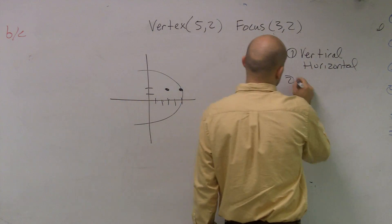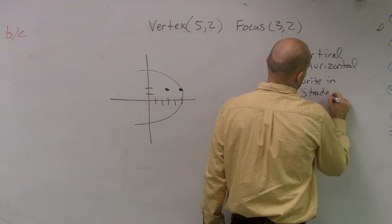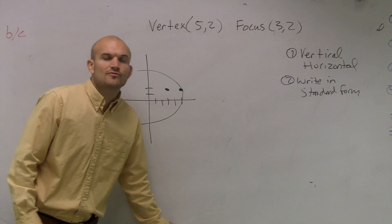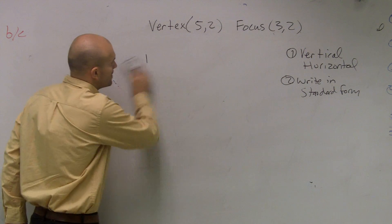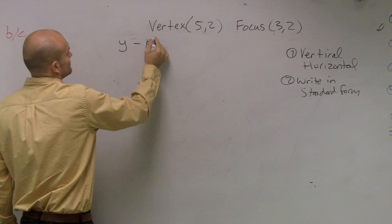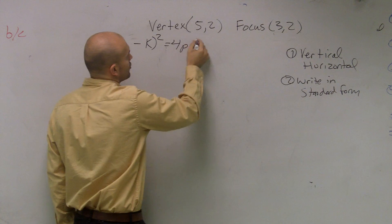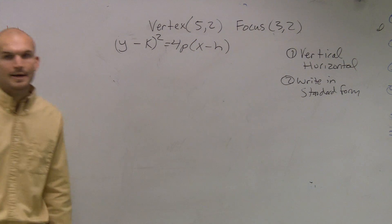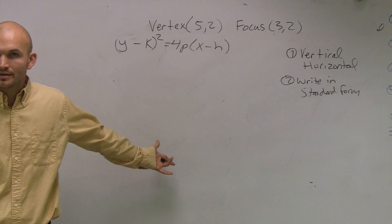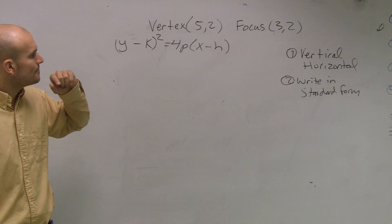We need to write in the form. So what is going to be our standard form of a horizontal? Well, remember, a horizontal means we're going to have y minus k squared equals 4p times x minus h. So now, ladies and gentlemen, let's just take a look at what information we've been provided, and let's just plug it in.